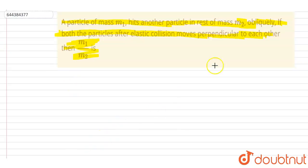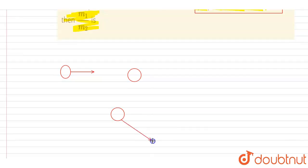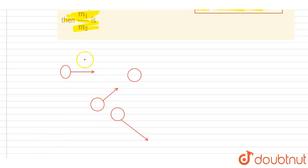If I talk about m2, m2 will only move along the line of impact after the collision, because before the collision it was not having any velocity. So it can only gain velocity in the direction along the line of impact. Let's say it is moving in this direction after the collision, and m1 is moving in this direction.